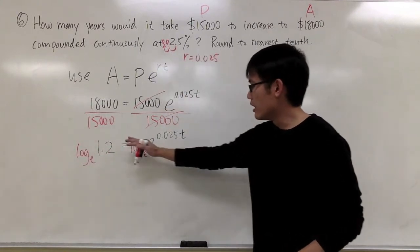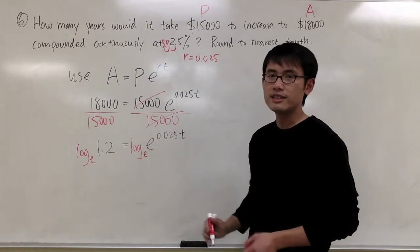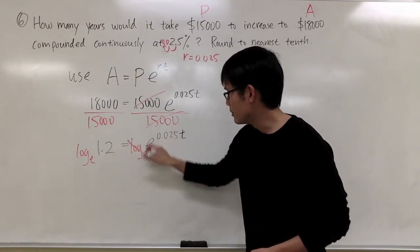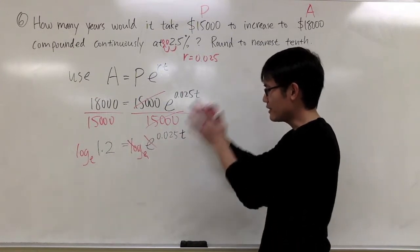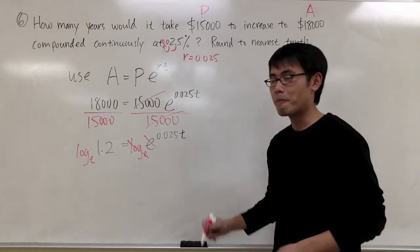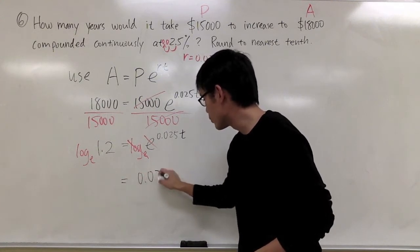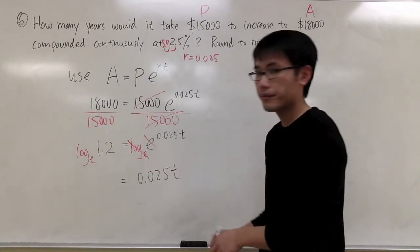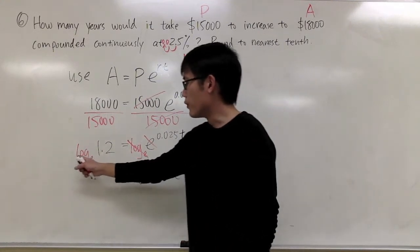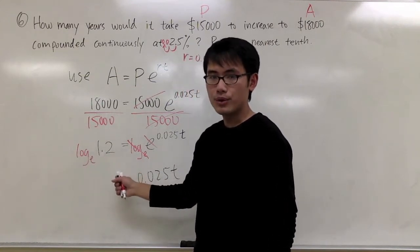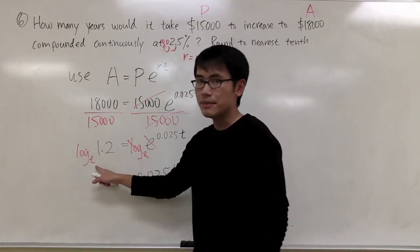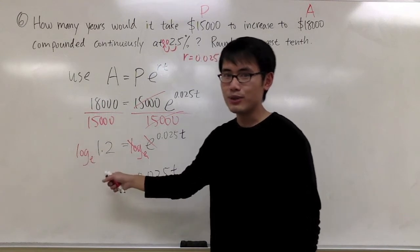And this way, log base e and e will cancel each other out. So let me just write this down, and I'll cancel them out to show you. And then on the right-hand side, we will just get 0.025t. However, for log base e of 1.2, e is a special number.